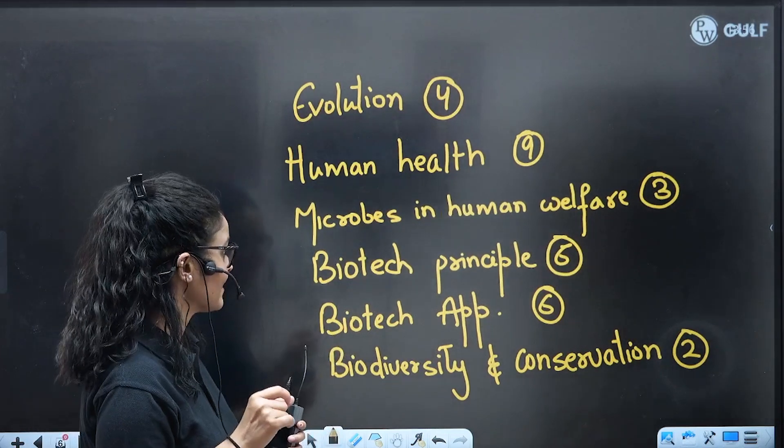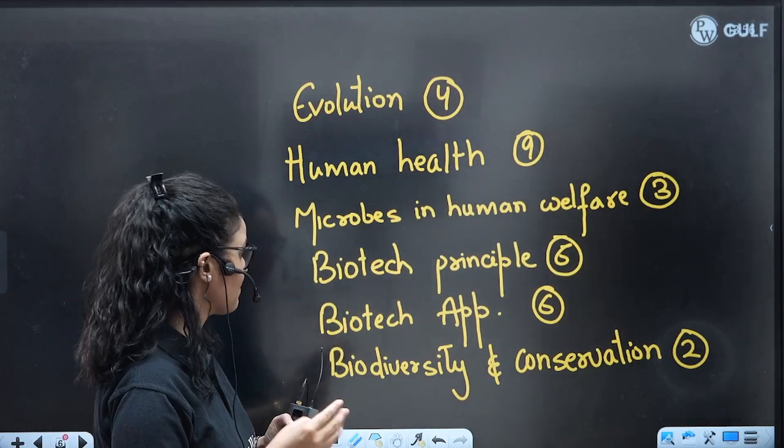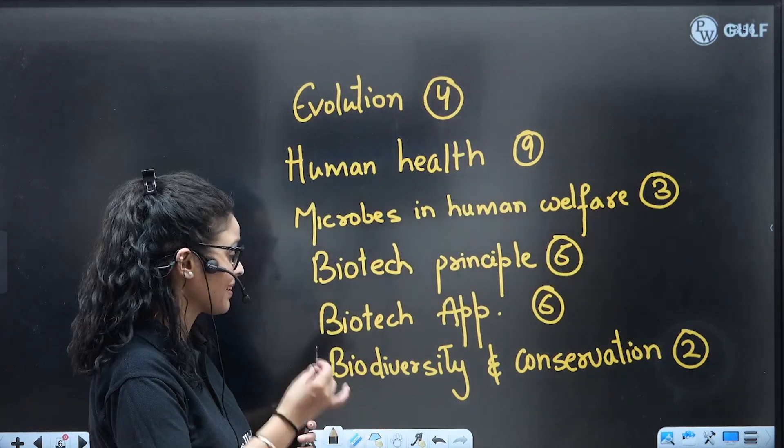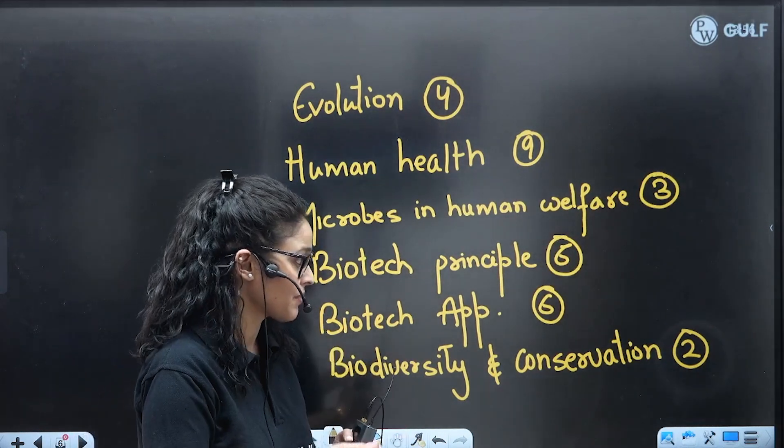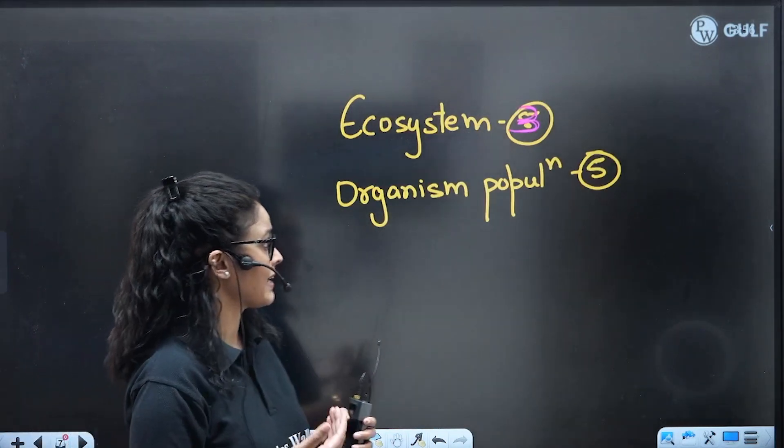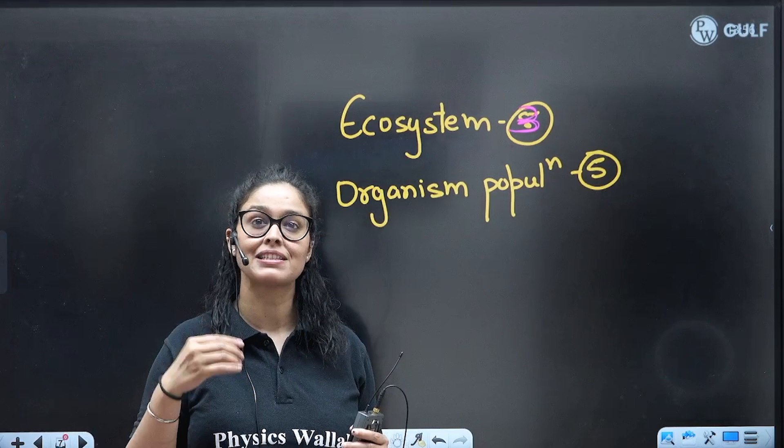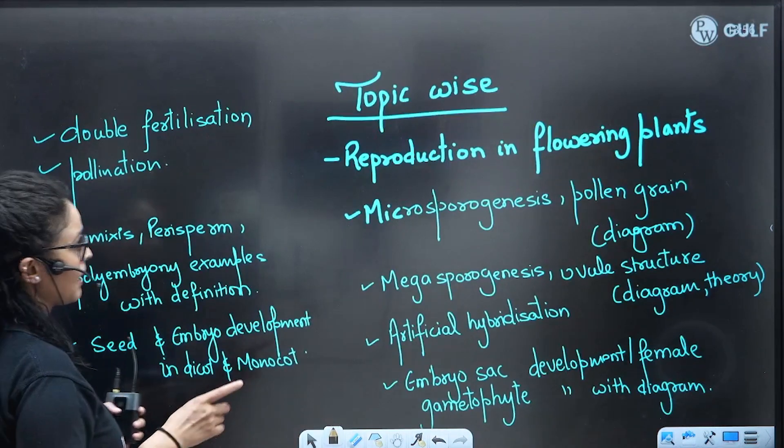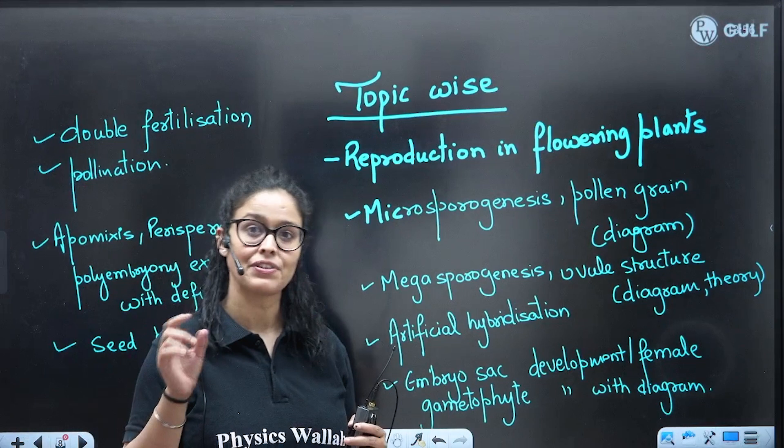Microbes in Human Welfare 3 marks, Biotechnology Principles 6 marks, Biotechnology Applications 6 marks, Biodiversity and Conservation 2 marks, Ecosystem 3 marks, Organism and Population 5 marks. This is the weightage of your biology chapters and we will see the topic-wise weightage of each chapter now.